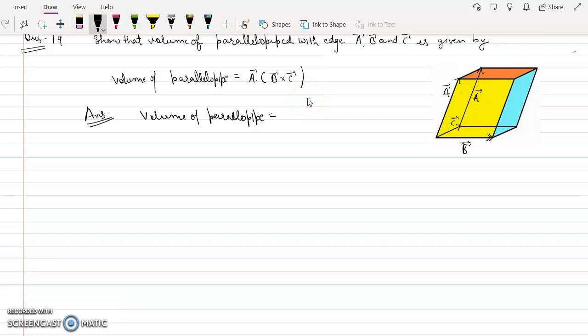This is question number 9 of Kleppner-Kollenkov in which we have to prove that volume of the parallelepiped is vector A dot B cross C.